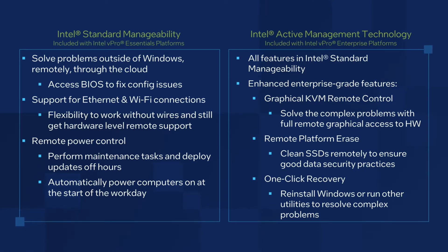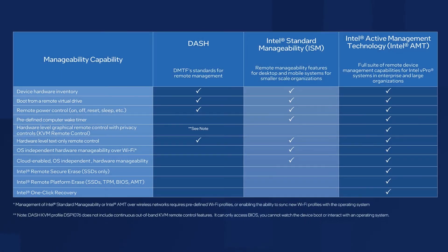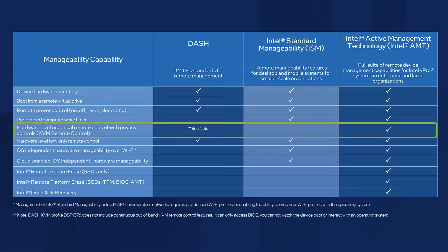Let's get into the differences between Intel AMT and ISM. As I mentioned before, ISM provides a subset of capabilities found on Intel AMT. This chart outlines the differences in management features between DASH, ISM, and Intel AMT. Intel AMT offers the most remote management capabilities of the three. It includes exclusive features like KVM remote control that give you remote hardware level keyboard, video, and mouse access.